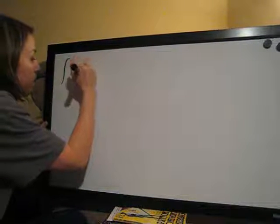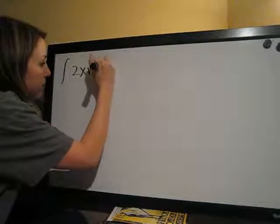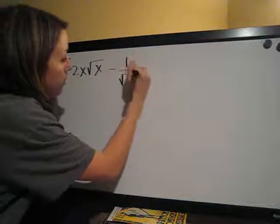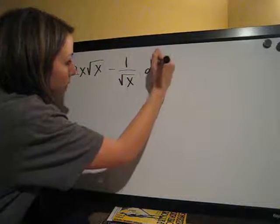Okay, the new problem is another integral problem, 2x times the square root of x minus 1 over the square root of x dx.